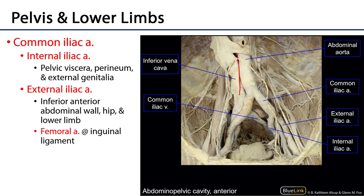The abdominal aorta is going to bifurcate into the common iliac arteries at approximately the level of the fourth lumbar vertebra. Each of those common iliac arteries will then shortly thereafter bifurcate into the external iliac artery and the internal iliac artery. The external iliac artery runs under the inguinal ligament to become the femoral artery, which is the major source of blood for the lower limb.